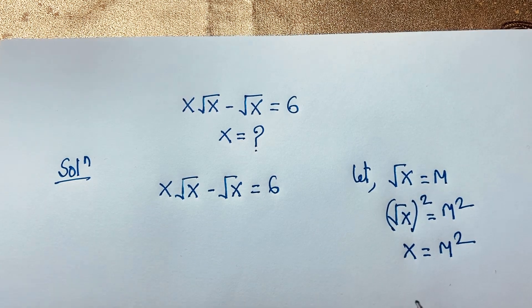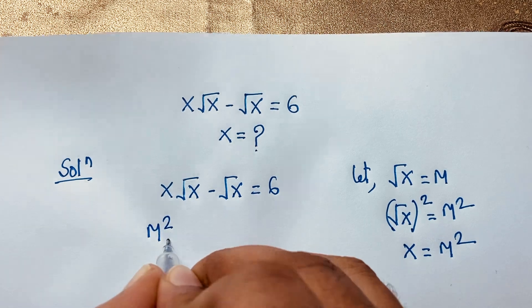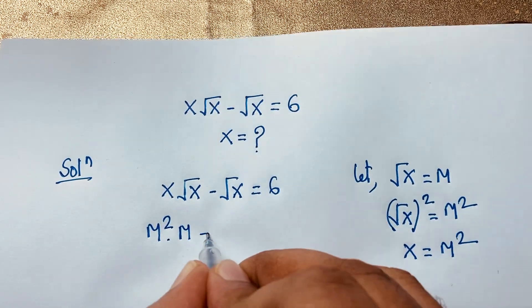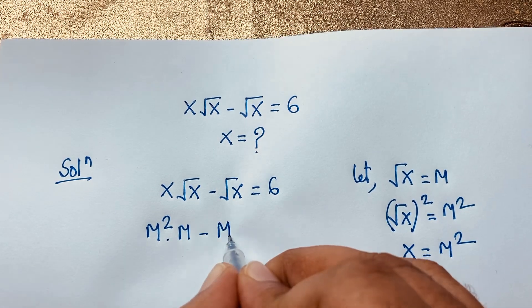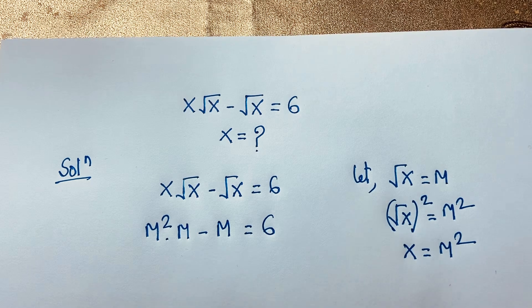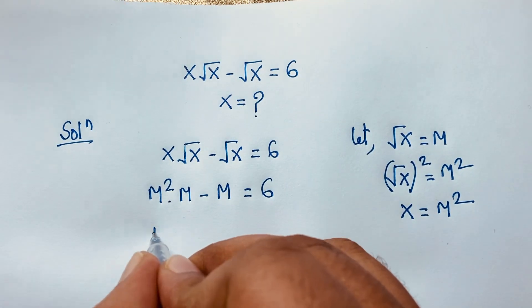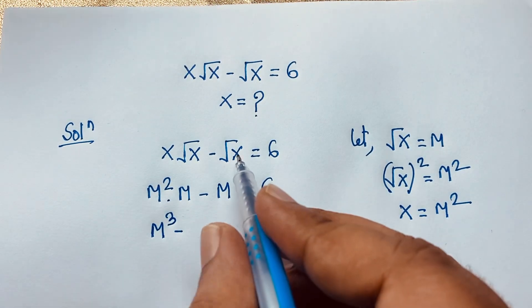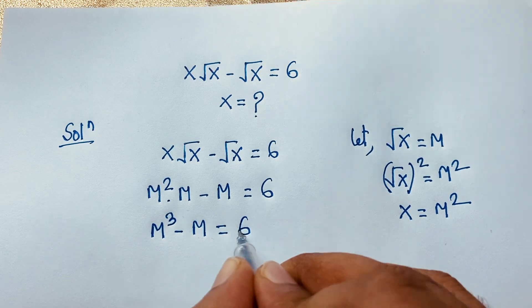Now we substitute. x is equal to m², so x·√x becomes m²·m, and √x becomes m. So the equation becomes m³ minus m is equal to 6.